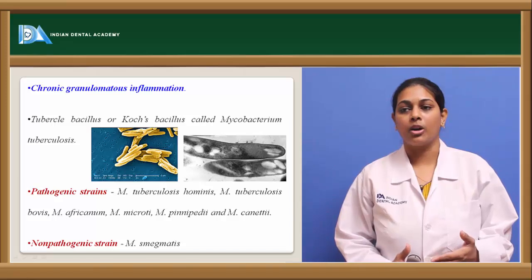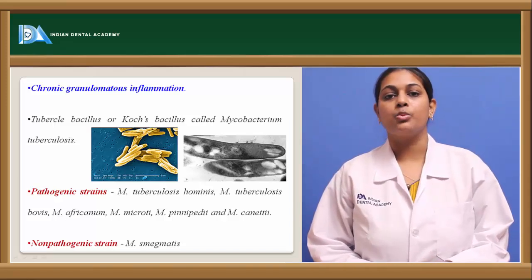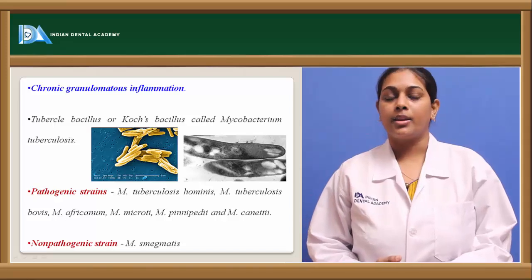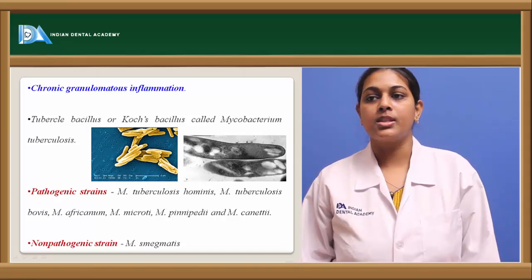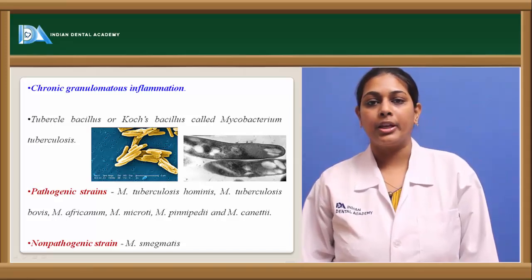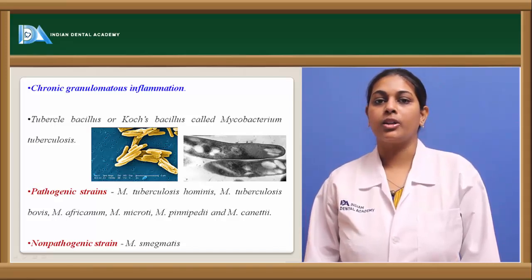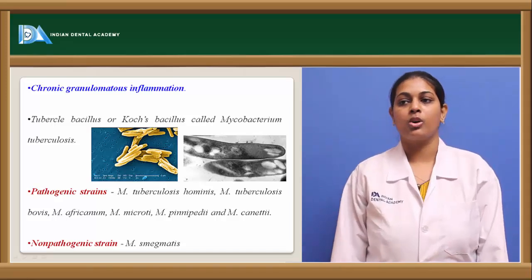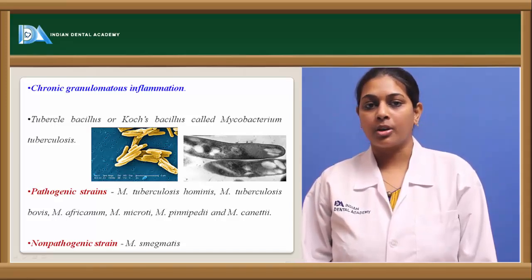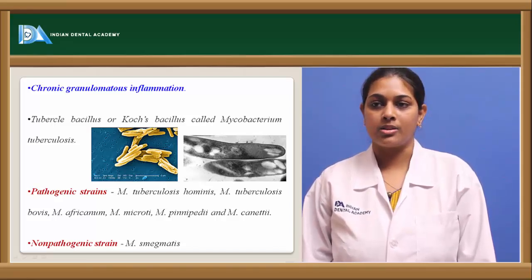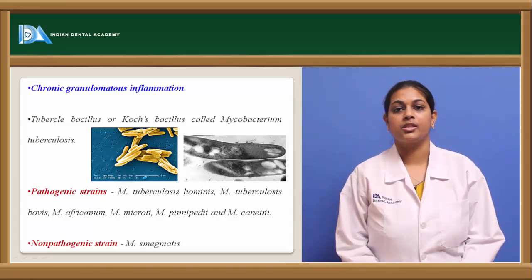Coming to the various strains of Mycobacterium tuberculosis, there are pathogenic strains and non-pathogenic strains. Among the pathogenic strains, which are harmful to our body, they are Mycobacterium tuberculosis hominis, Mycobacterium bovis, africanum, microti, pinnipedi, and canetti. Mycobacterium tuberculosis hominis is so called because it causes infection in human beings, and Mycobacterium tuberculosis bovis causes pathogenicity in bovine species.